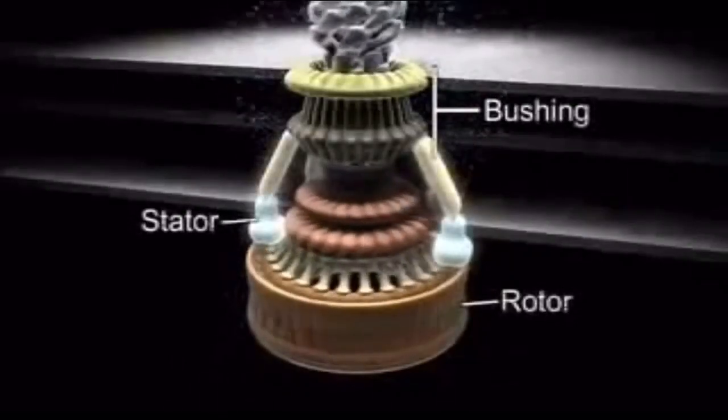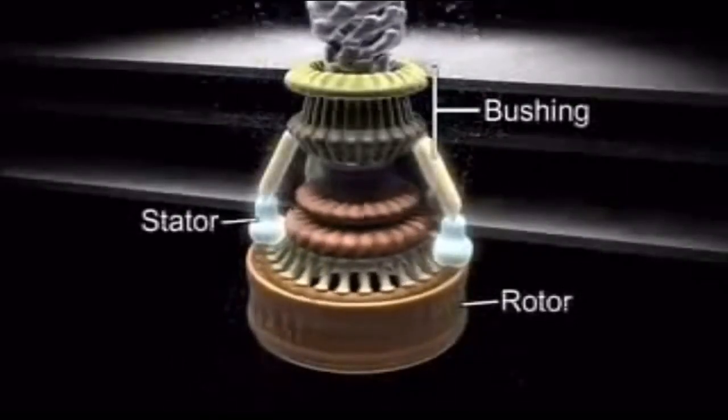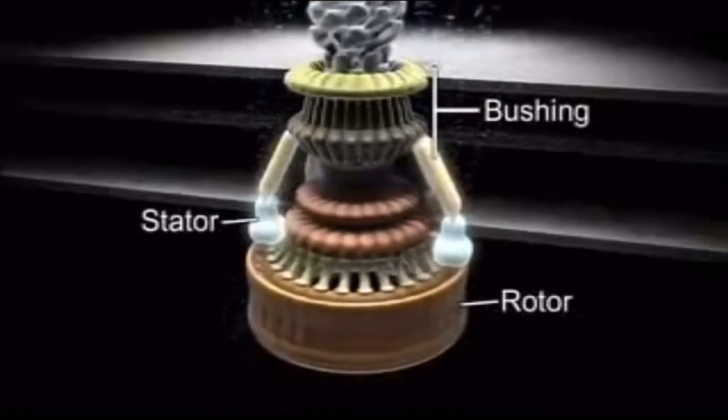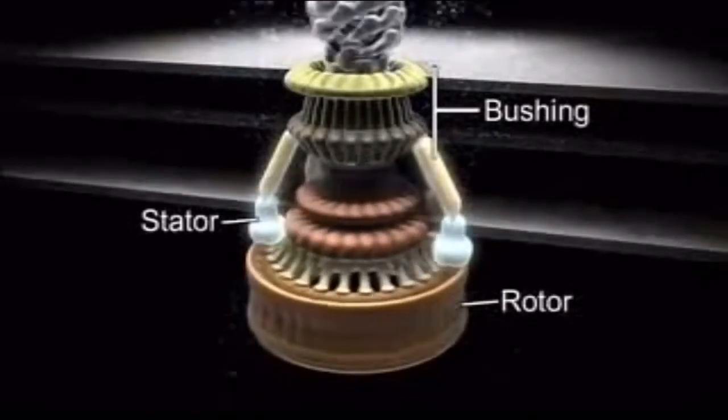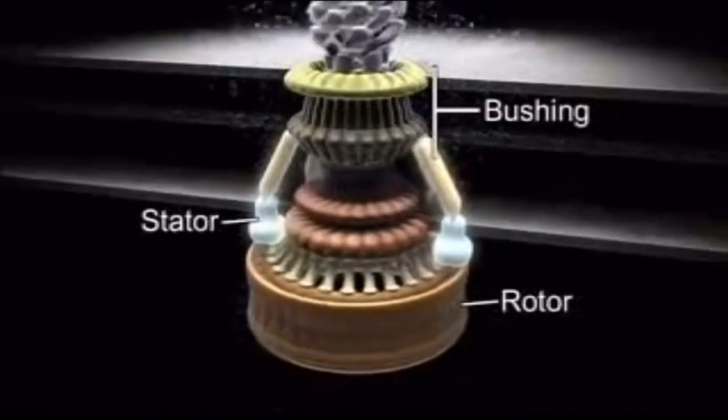The structure revealed by electron microscopy was very much like an artificial motor with its stator, rotor, and bushing and surprised the world.